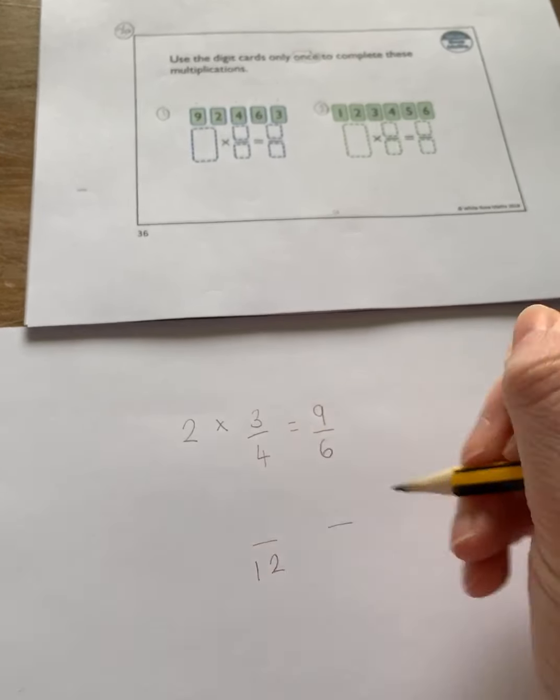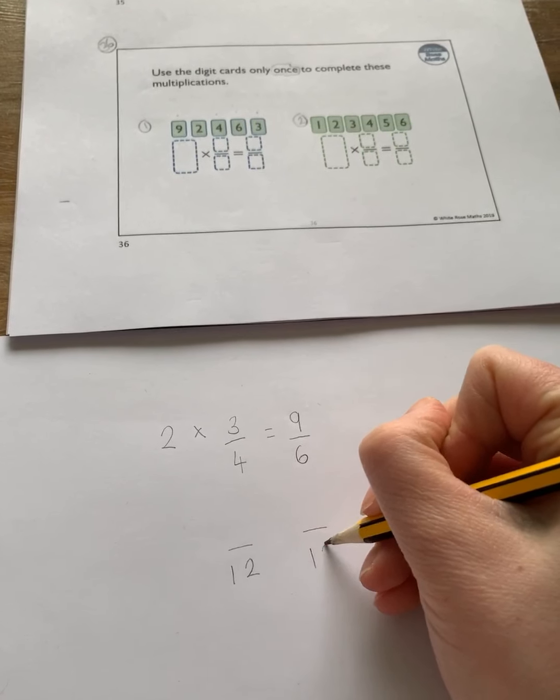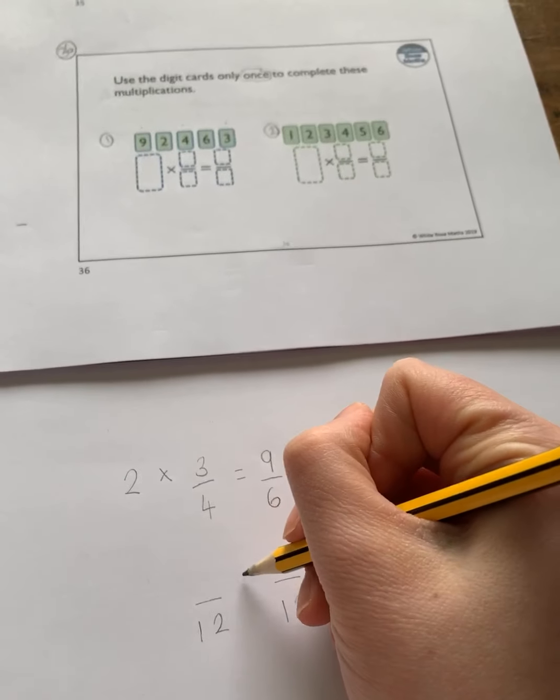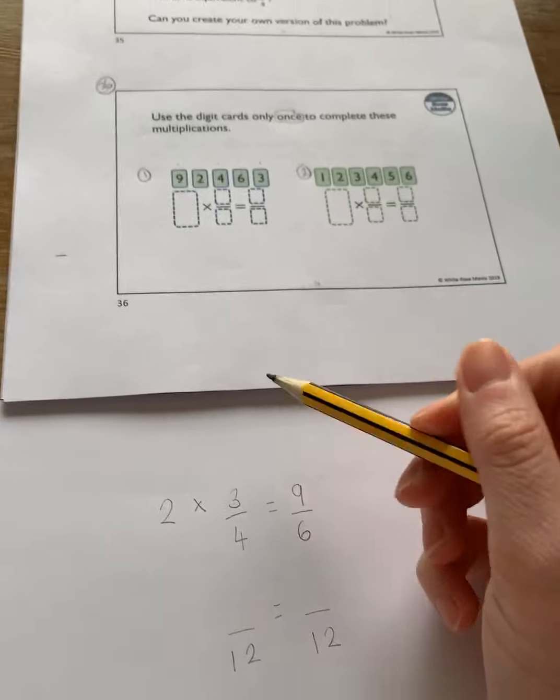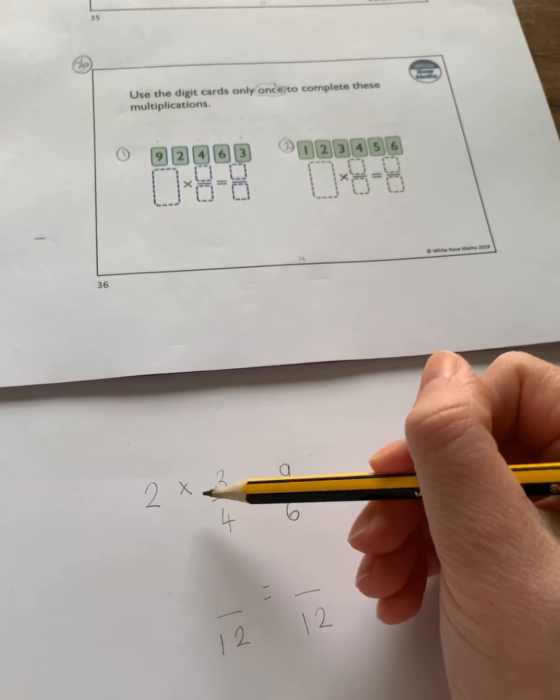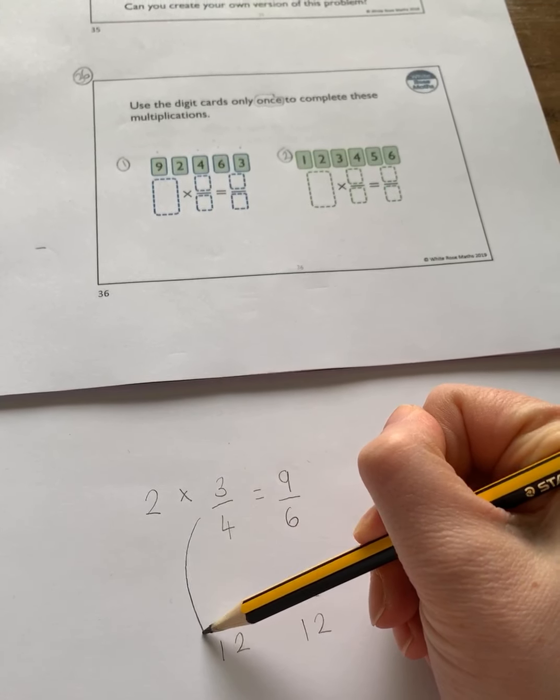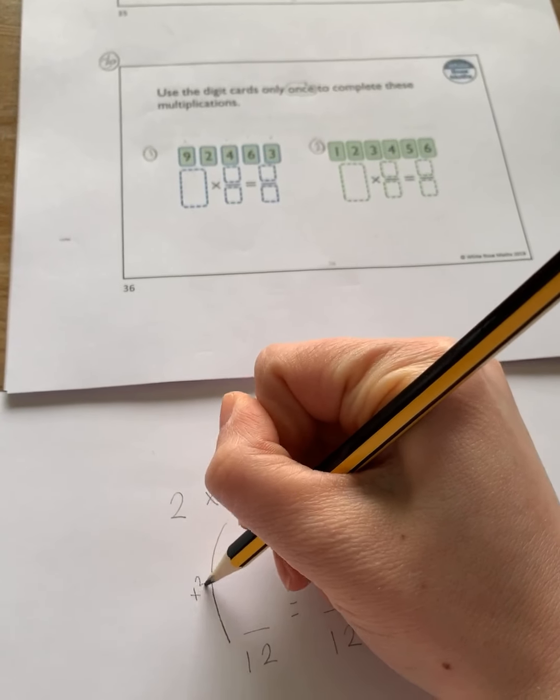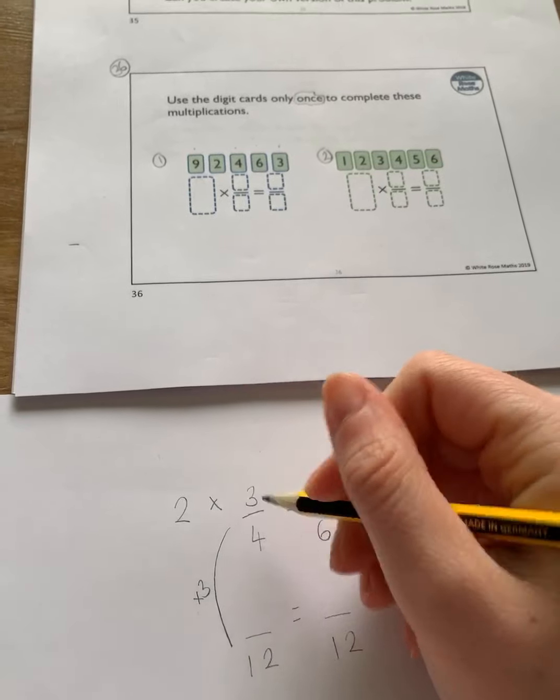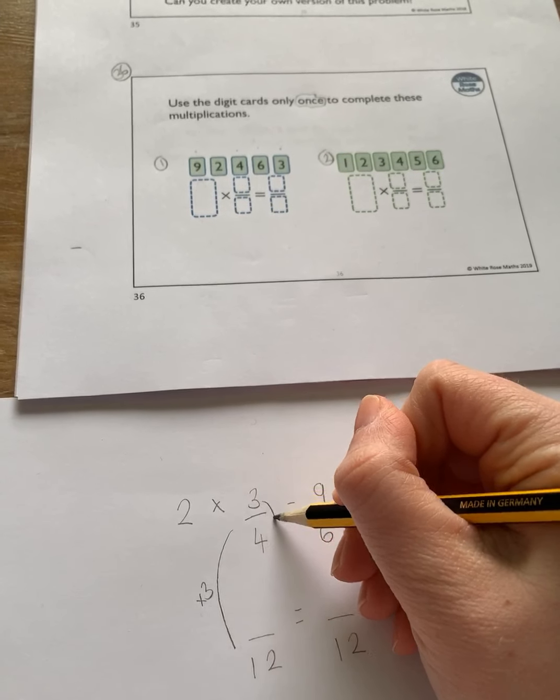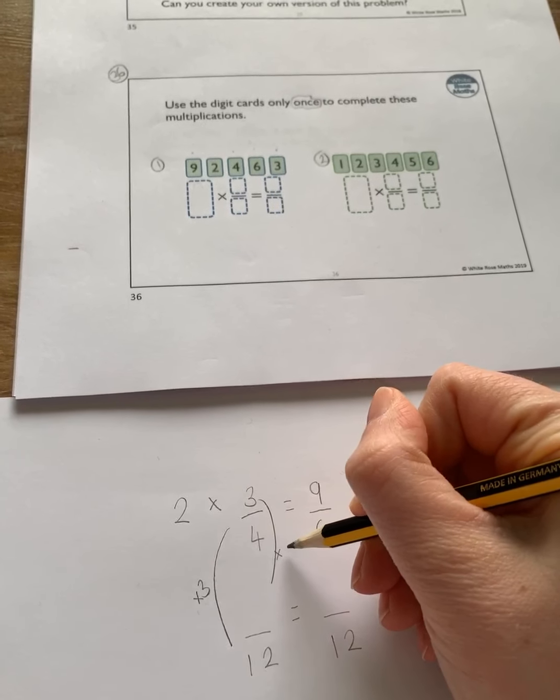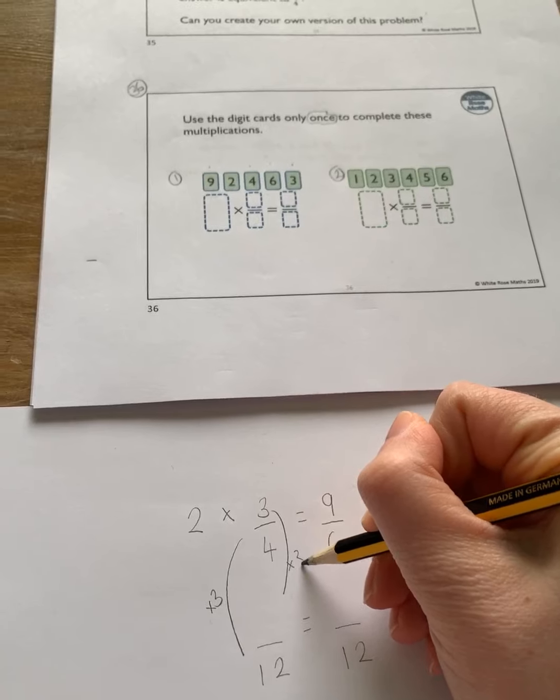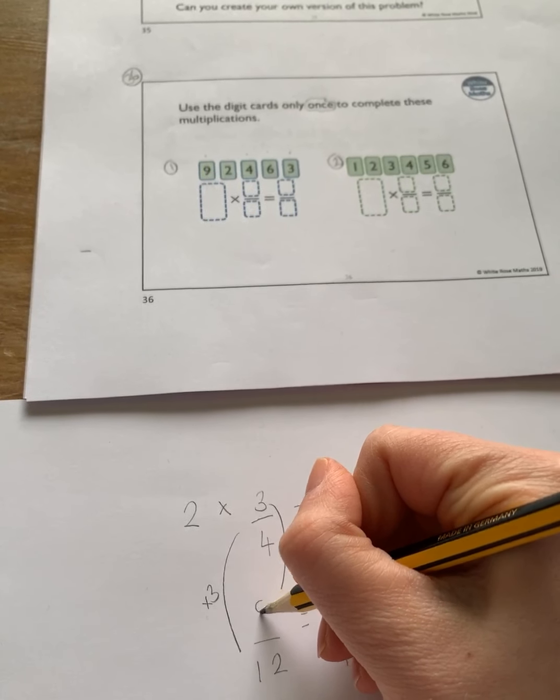I'm just going to put my denominator underneath, I have this equals here, and I want to think how have I got from my four to twelve? Well I've had to times it by three. Okay so whatever you do to your denominator you have to do to your numerator too so I'm going to times up by three too. So that would leave me with nine.